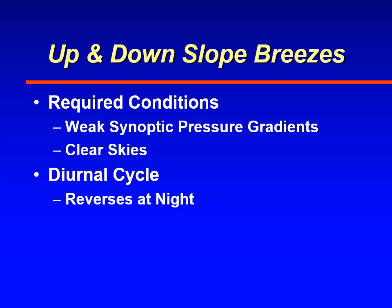The heating and cooling of the slopes results in air that rises and sinks, just as described with thermally driven circulations. This reverses as the day progresses. At night, you get winds flowing down slope, and during the day, winds flowing up slope. This is what we call the diurnal cycle — the winds actually reverse.